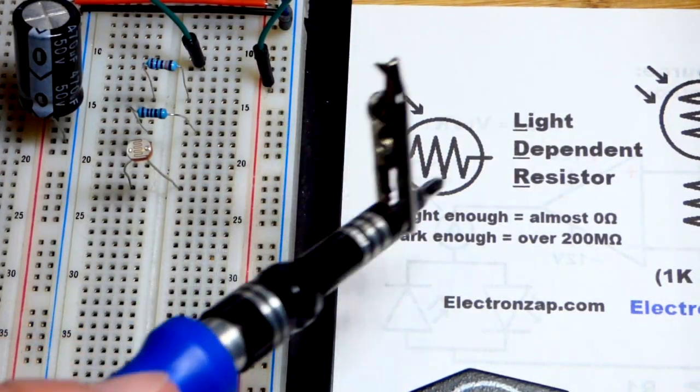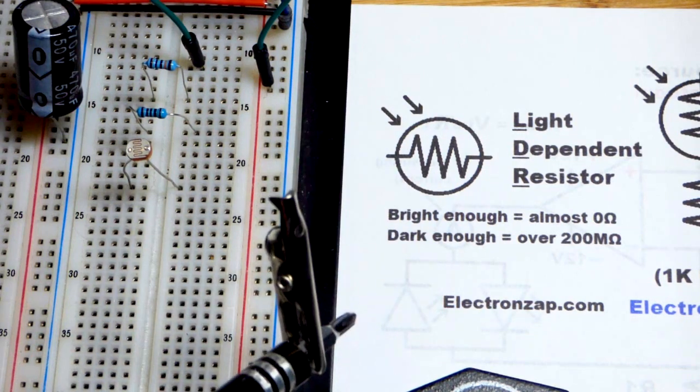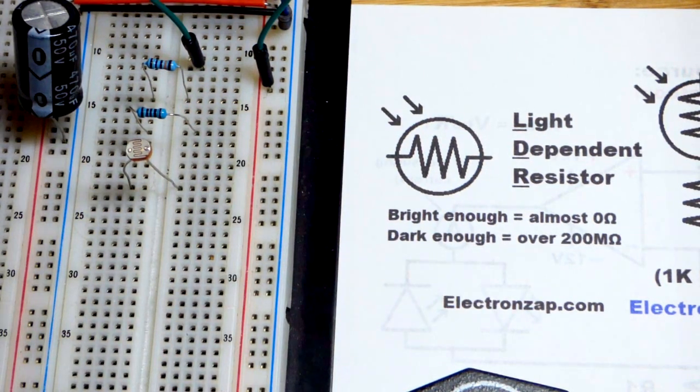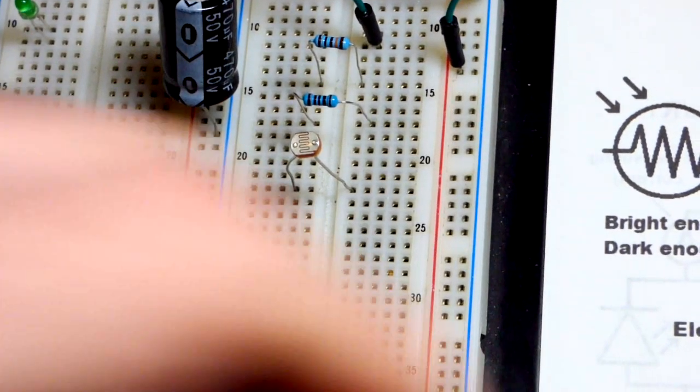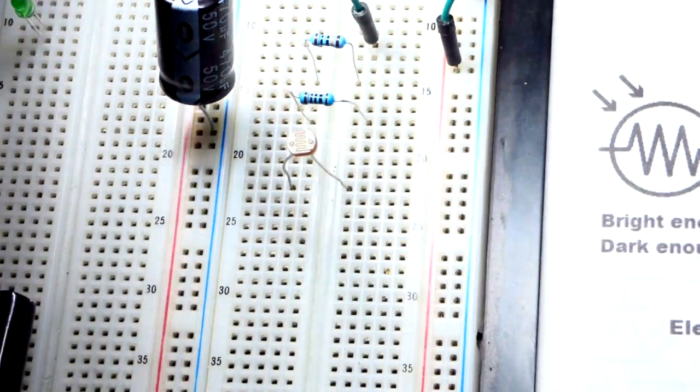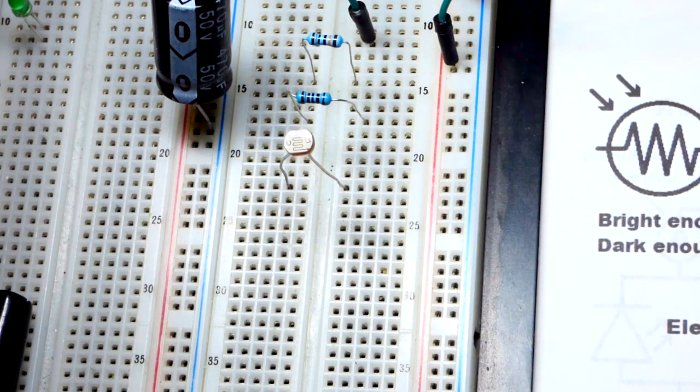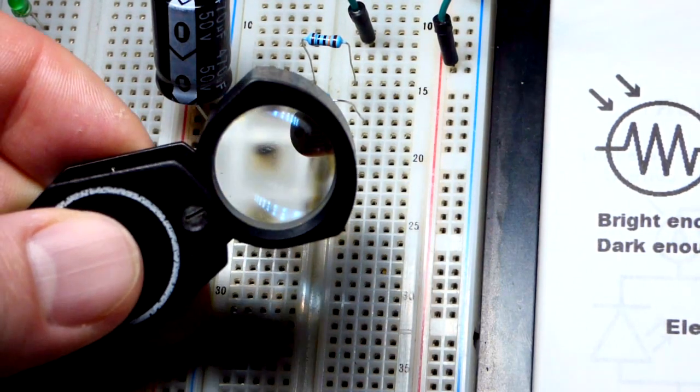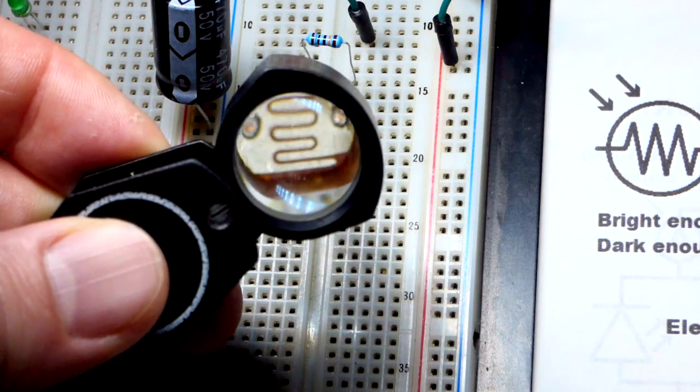In this video we're going to look at the light dependent resistor and there is the schematic symbol. Here is the physical component so it has the property of when there's a bright light on it its resistance goes down and when it's darker its resistance goes up and it does those extremes pretty extremely.